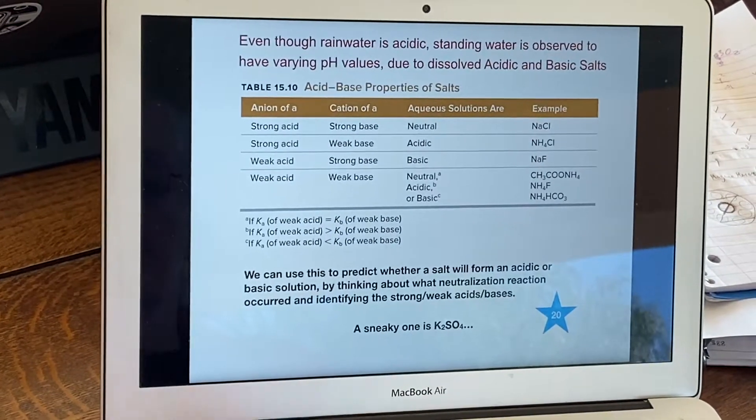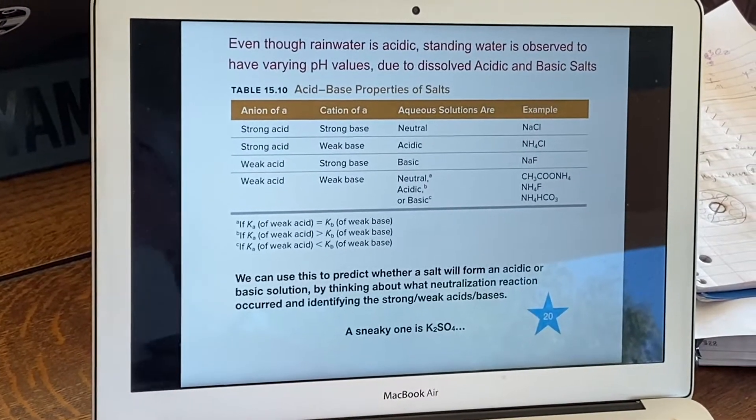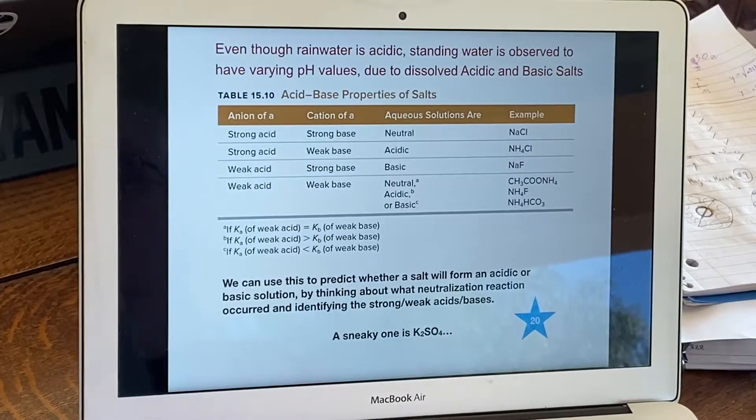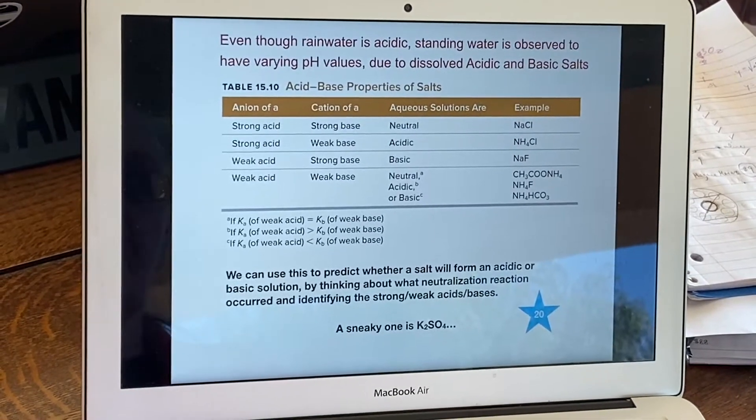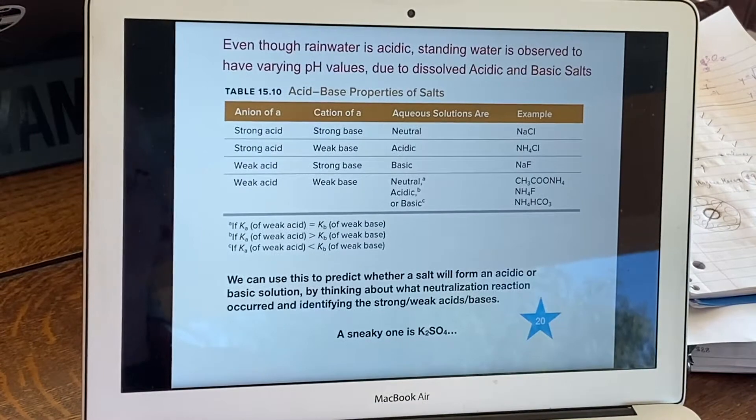We said rainwater is acidic. So you might think since all the water falls out of the sky, it's all rainwater and everything we see sitting around should be a little acidic, but nope.